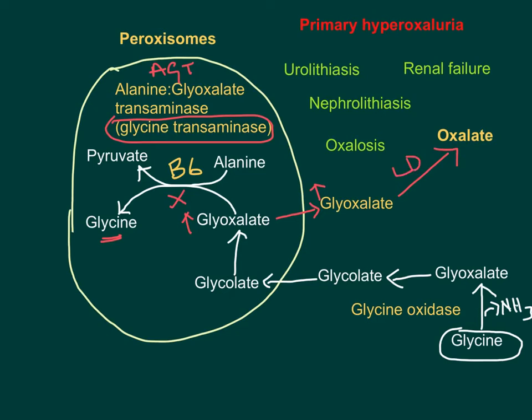Elevated cytoplasmic glyoxalate is diverted into oxalate formation, carried out by lactate dehydrogenase enzyme. Another fate of cytoplasmic glyoxalate is conversion to glycolate, but that glycolate moves back into the peroxisome and is reconverted to glyoxalate — which cannot be converted to glycine due to the AGT deficiency. So glyoxalate repeatedly returns to the cytoplasm, and levels keep rising, continuously driving oxalate formation.